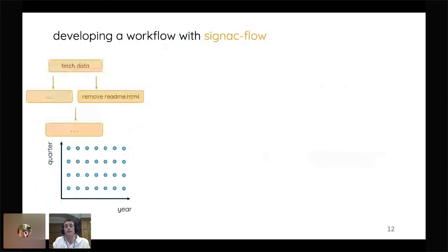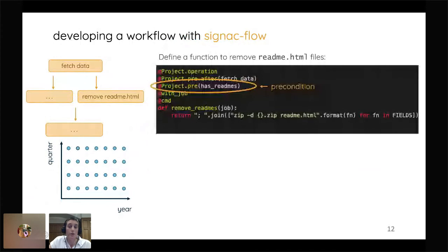And then with the SIGNAC flow side, so this is actually how do we go in once we've decided what parameters we want to investigate, how do we actually go in and do the data science on it? So if we have an idea of for each of these directories, we have a corresponding state point of what year, what quarter, and we know that we can access from, in this case it was from a government website that had traffic data corresponding to those years and quarters, we can have a fetch data operation. And then once we have acquired that data, it's going to pull everything down and there's going to be a lot of data cleaning that needs to be done. So let's say that every single directory now has a readme.html file that we don't need and it's going to get in the way of our data analysis.